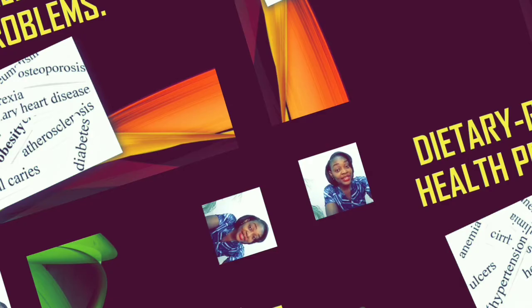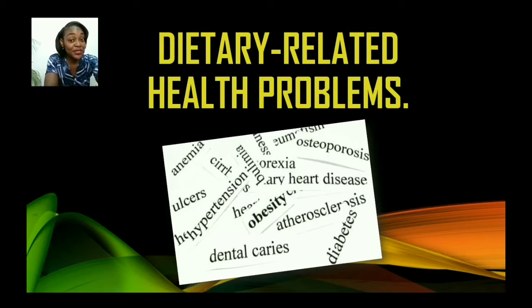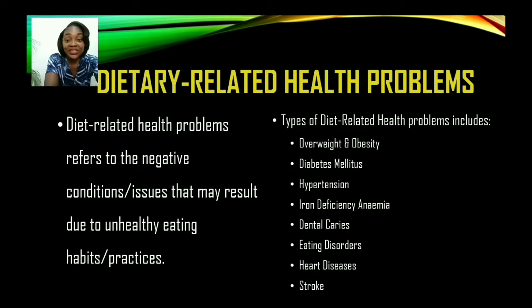What are diet-related health problems? Diet-related health problems refers to the negative conditions or issues that may result due to unhealthy eating habits or practices. Types of diet-related health problems include overweight and obesity, diabetes mellitus, hypertension, iron deficiency anemia, dental caries, eating disorders, heart disease, and stroke.